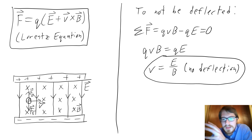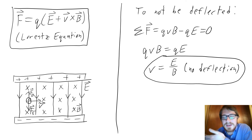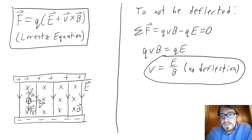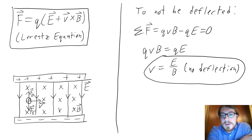By tuning the electric and magnetic fields very specifically, you can select only particles with a very specific velocity. This is used in particle accelerators to select particles with specific speeds and energies. It should be noted that this doesn't depend on the sign of the charge — if you put in a negative particle instead, the direction of both forces would be reversed, but you still need a speed equal to E/B.